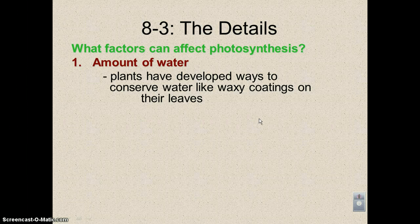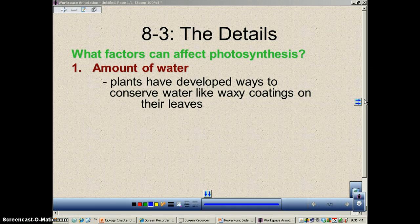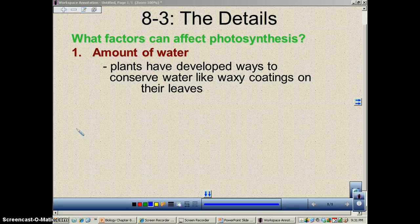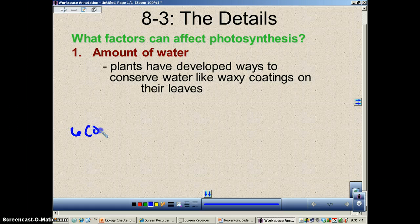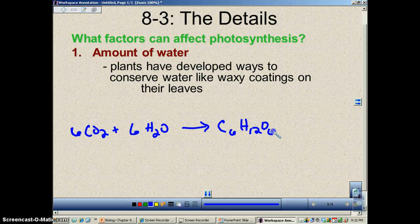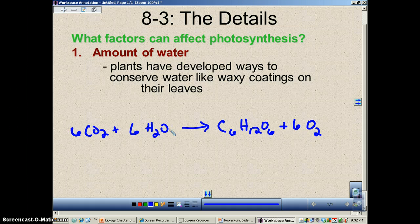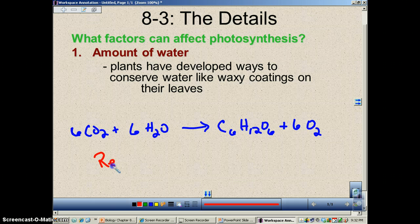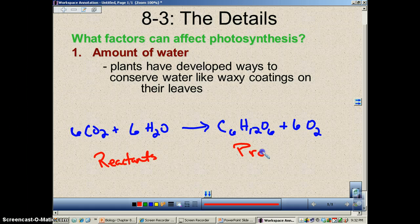All right, the first one is the amount of water available. Now, if you remember from earlier podcasts, we had the overall reaction of photosynthesis. Remember, it was 6CO2 plus 6H2O, and the presence of light will yield one molecule of glucose, C6H12O6, plus six molecules of oxygen as a waste product. So you're going to remember on this side of the equation, these are the reactants, and then over here, you have the products.